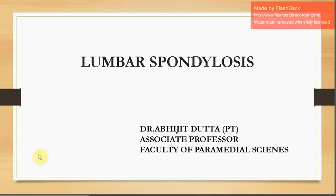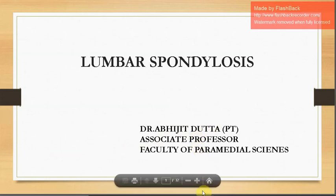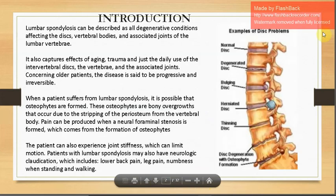Hello students, today we are going to see another topic called lumbar spondylosis. In the previous class we have seen about cervical spondylosis, so it's the same kind of pathology caused by degenerative changes in the structures of the vertebral column — the disc and ligaments. The most common part was the cervical region in spondylosis, and the next most common is the lumbar area.